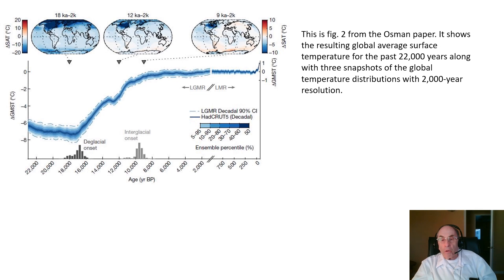Figure two from the Osmond paper shows the resulting global average surface temperature for the past 22,000 years, along with three snapshots of the global temperature distributions at 2,000-year resolution. There are several important features to point out on this graph.